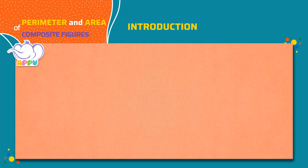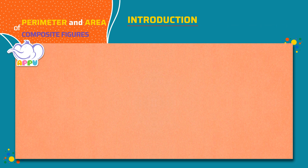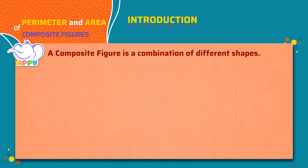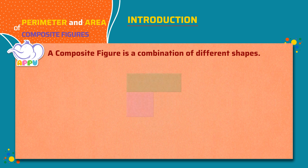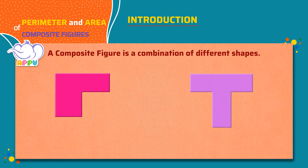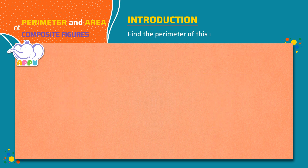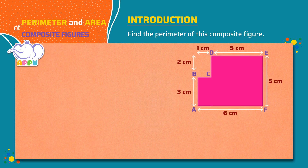A composite figure is a combination of different shapes. Here are a few examples: this composite figure has a rectangle and a square — this can also be seen as two rectangles. This composite figure also has two rectangles. To find the perimeter of a composite figure, we add the lengths of all the sides.